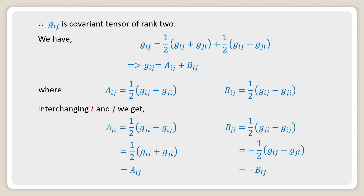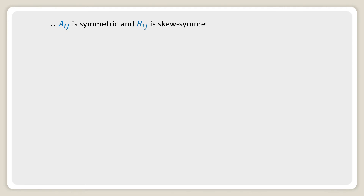Interchanging i and j we get A_ji = ½(g_ji + g_ij) = ½(g_ij + g_ji) = A_ij, and B_ji = ½(g_ji − g_ij) = −½(g_ij − g_ji) = −B_ij. That is B_ji = −B_ij. Therefore A_ij is a symmetric tensor and B_ij is a skew-symmetric tensor.